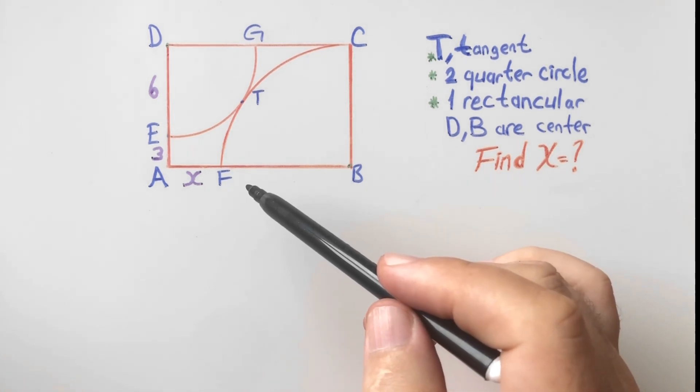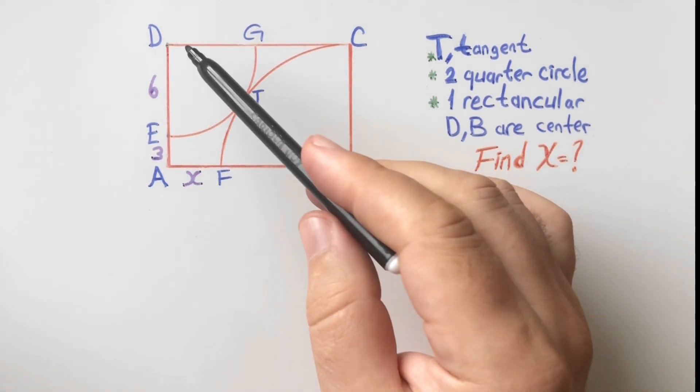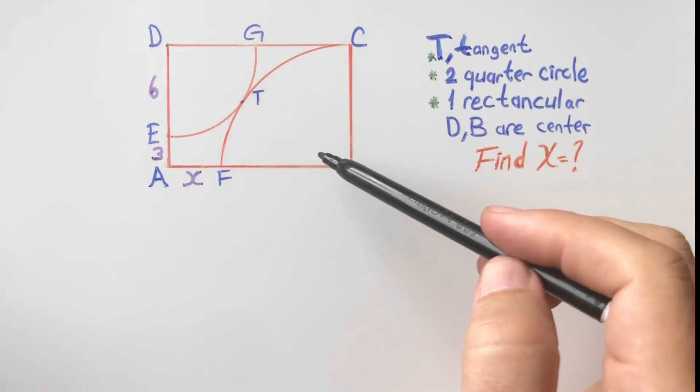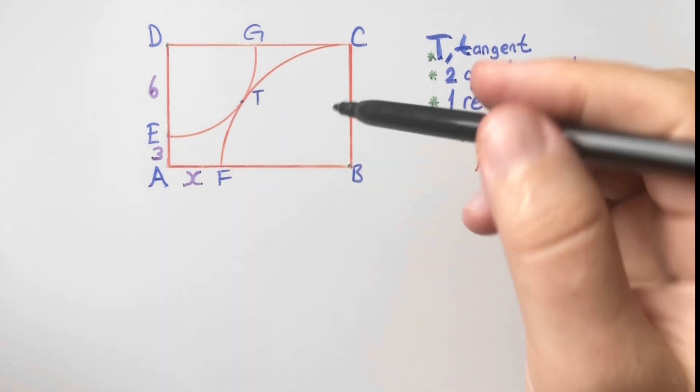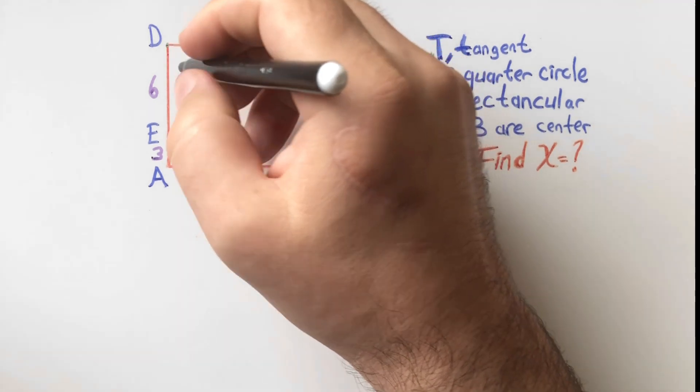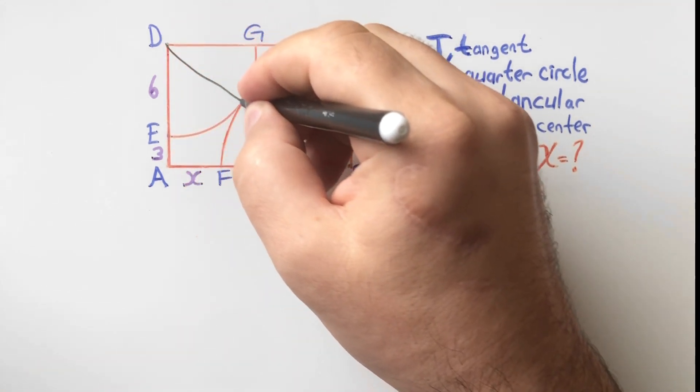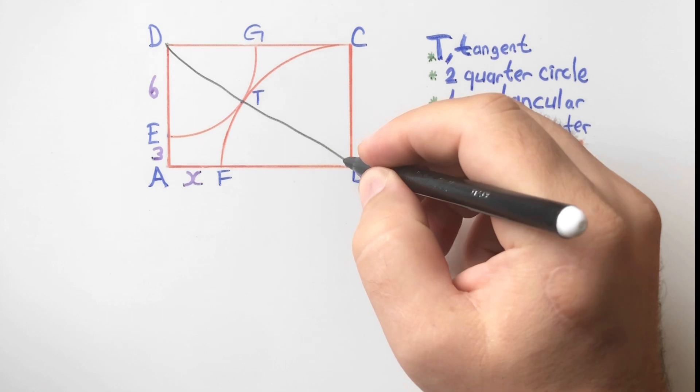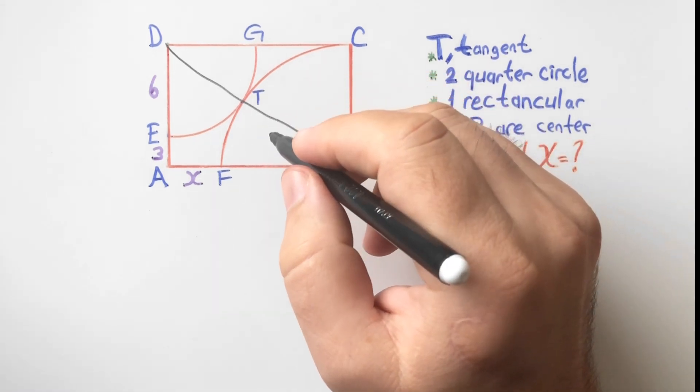First of all, we know that if we have two tangent circles like this, let's connect the radiuses. This line has to be linear because of the tangent point.